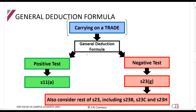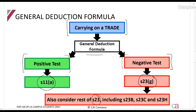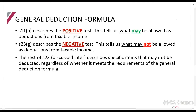If you are carrying on a trade, the general deduction formula is split into two parts: the positive test and the negative test. The positive test tells you when you may deduct — yes, you can deduct — whereas the negative test says no, you may not deduct. The positive test is discussed in section 11a, and the negative test is in section 23g. The rest of section 23 also provides a list of things for which you may not claim a deduction.